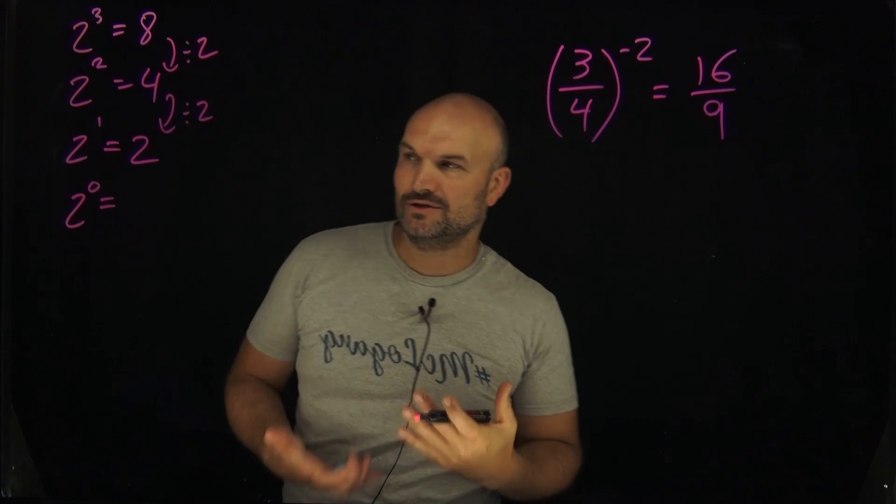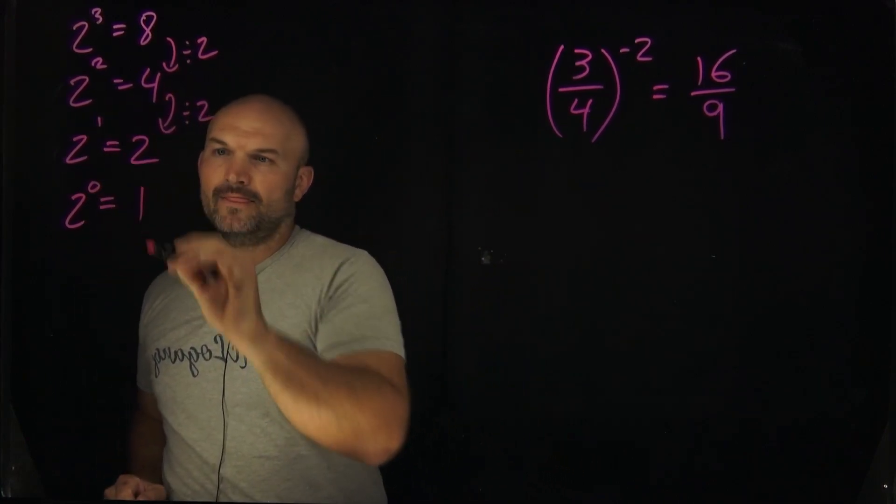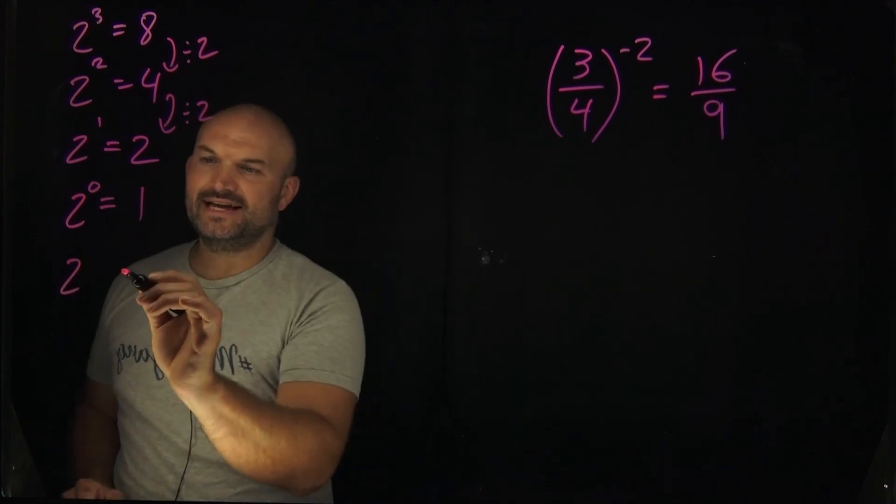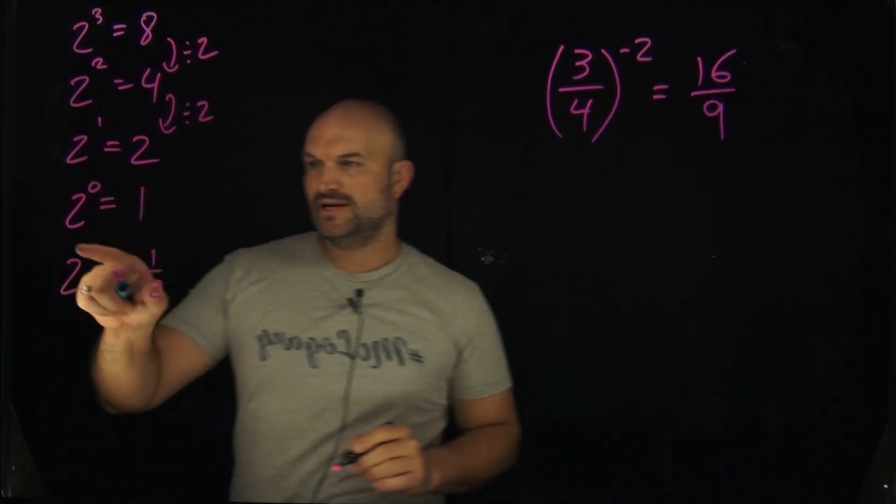So we can kind of write a nice little conjecture and try to see that, hey well you know if I divide by 2 again, that's gonna get me to a 1. What if I did that again? Well then I would have a 1 divided by 2, which would be 1 half.